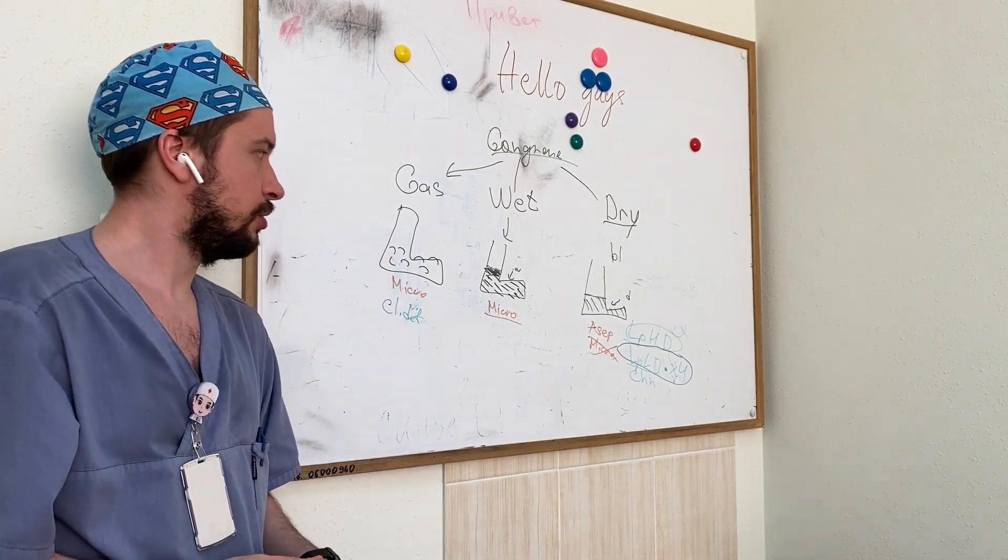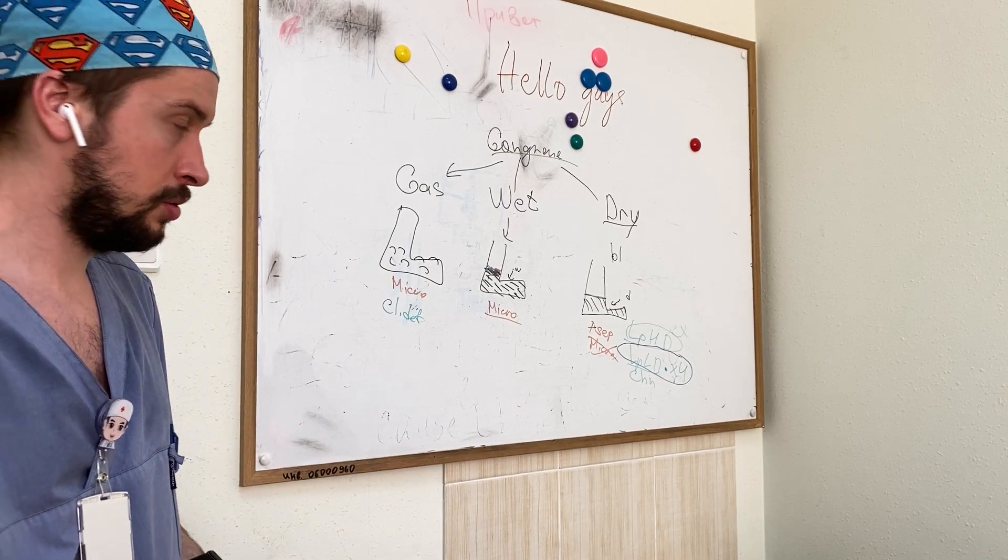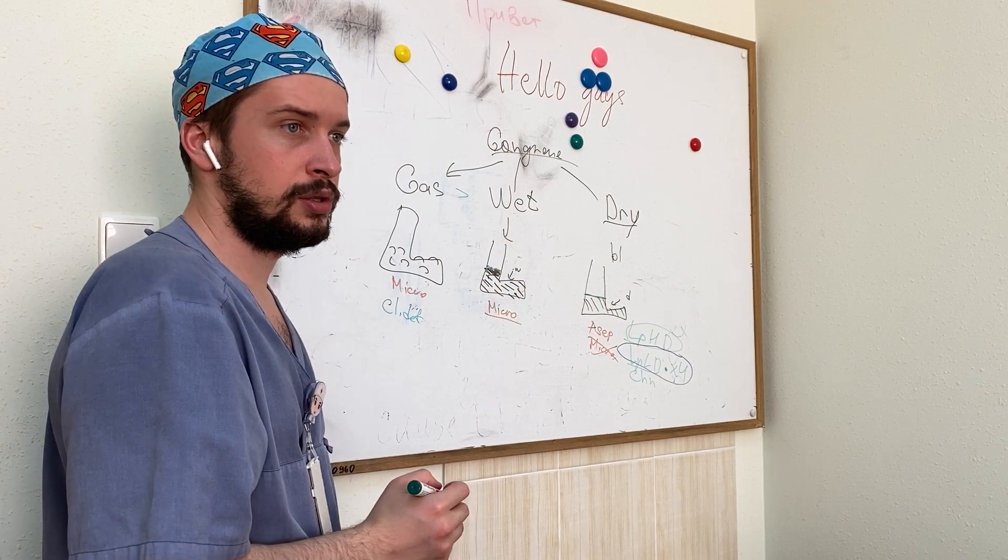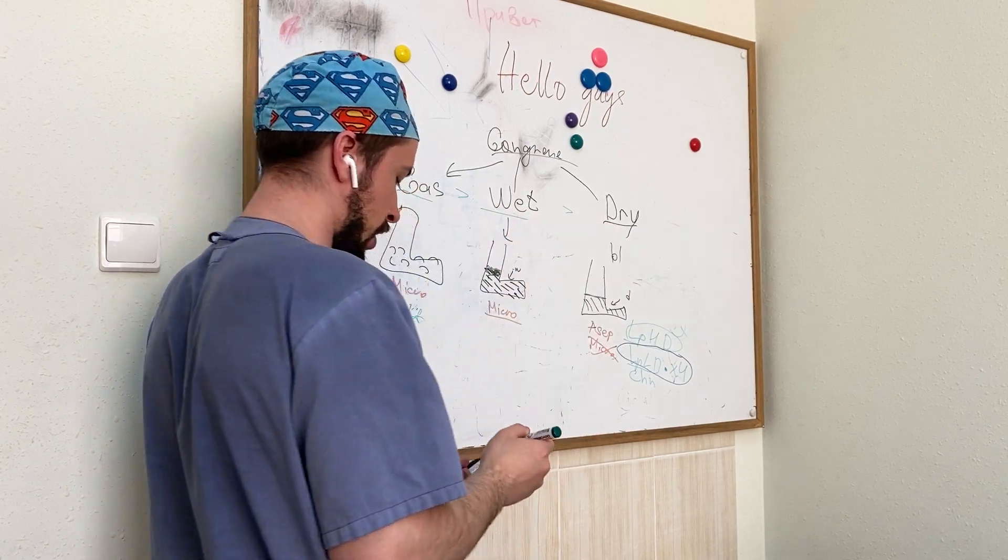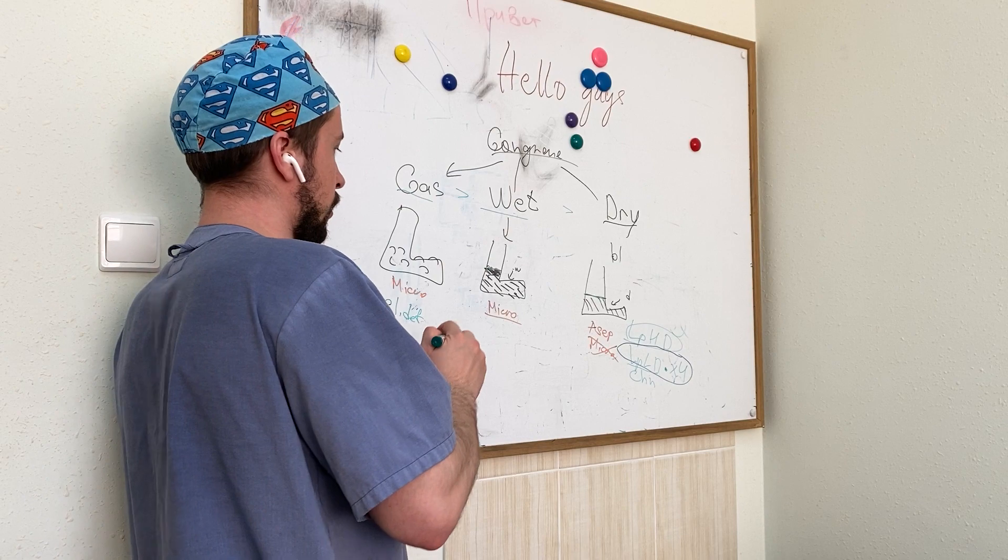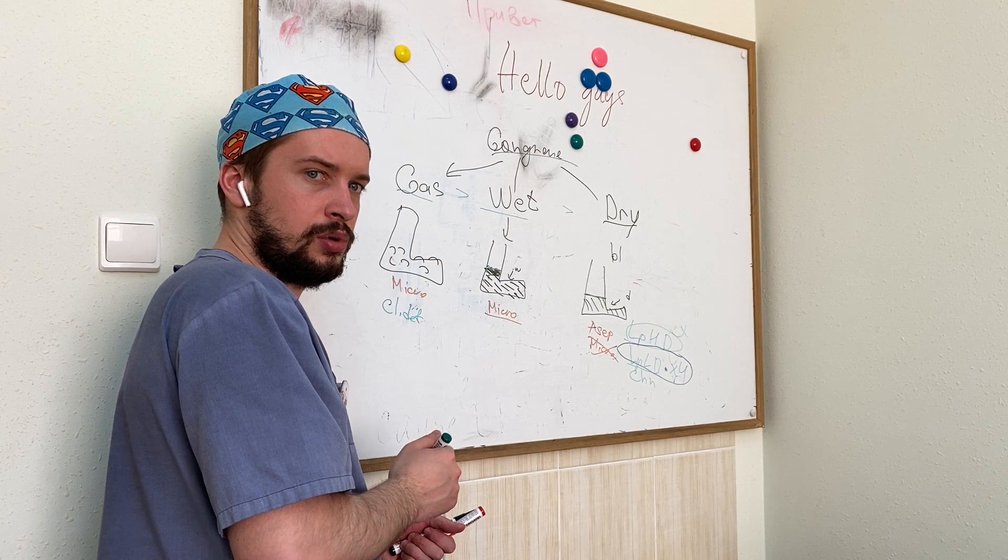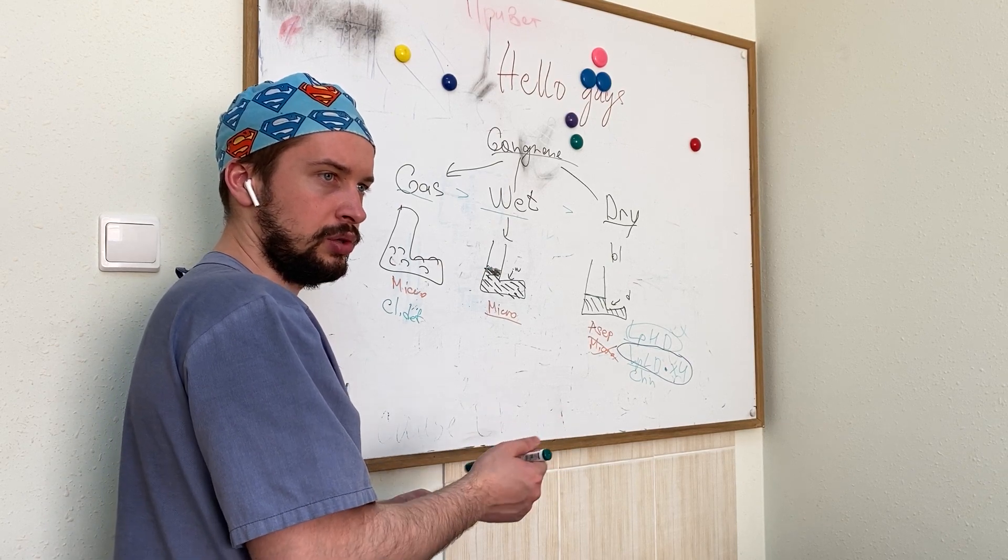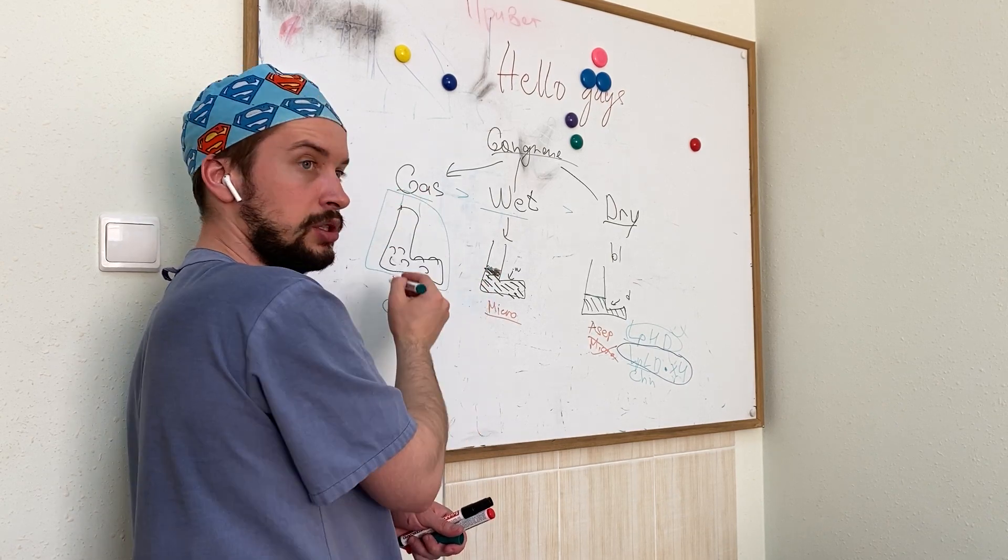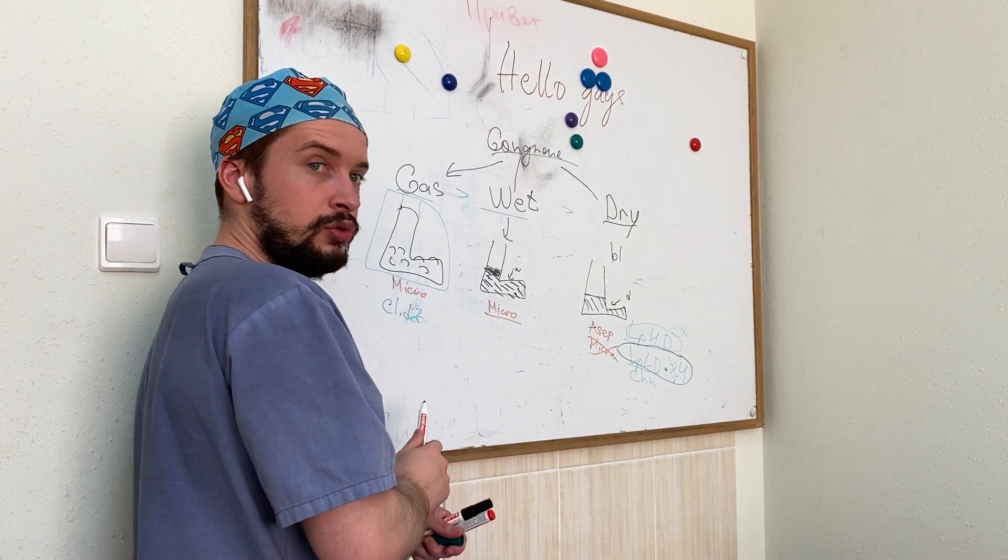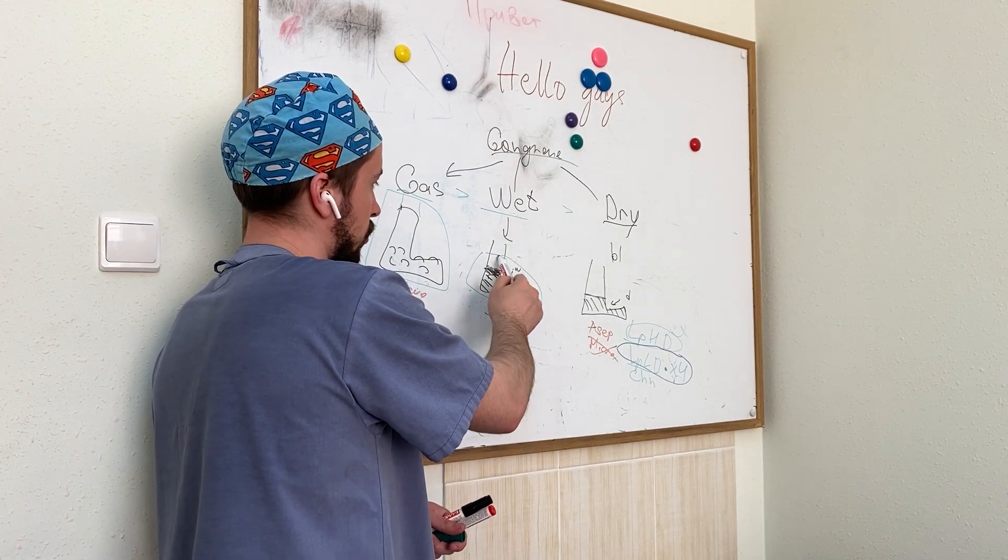What is the most problem of this? Wet, dry. Now, if we see patient with gangrene, what we need to do for him? Surgery, amputation. But part of leg, what we will amputate, is big. If we see wet gangrene, we will do surgery, but not so big part.